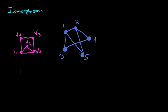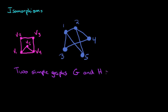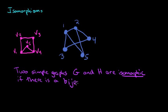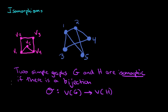I'm going to write down the definition of an isomorphism, and then explain the word bijection a little bit more carefully. If you've never heard the word bijection, let's go through the definition together carefully. We say that two simple graphs G and H are isomorphic if there is a bijection — and if you don't know what bijection means, don't worry, we will come back to that. The bijection is a map that takes the vertices of the first graph to the vertices of the second graph, which preserves adjacency.